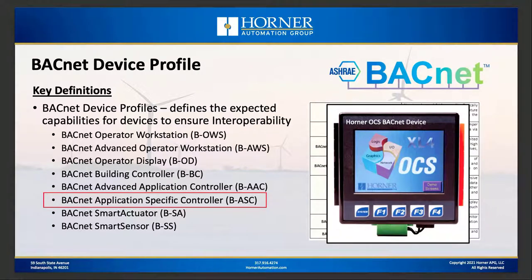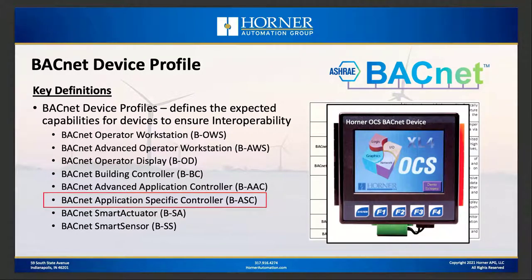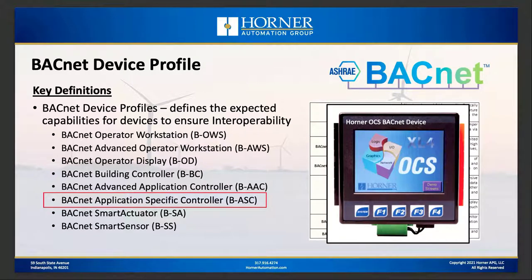It's also important to classify different device types using something called a device profile. These eight profiles are organized from the most complex at the top — the computer acting as the building management controller — down to the most basic, like a simple temperature sensor. When it comes to the Horner OCS, we are an application-specific controller, which makes sense. If you're using an OCS on BACnet, you're probably using it to control lighting, a chiller, compressed air, or backup power generation — all different applications doing different levels of control.